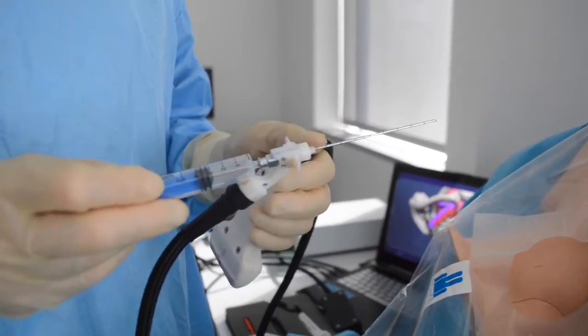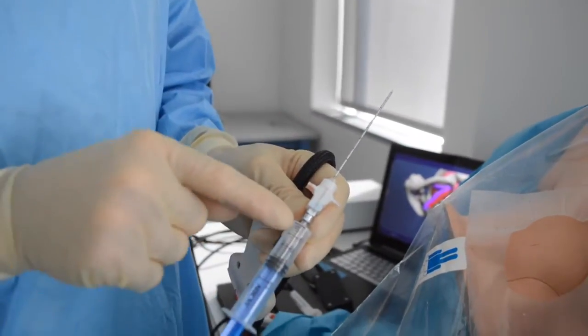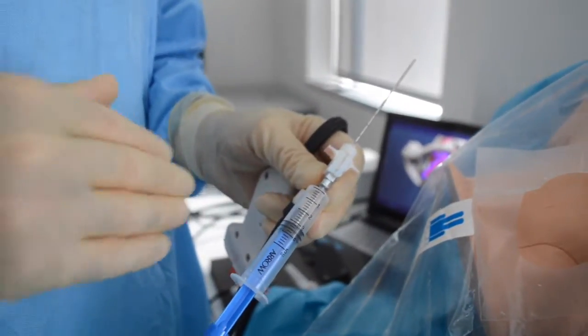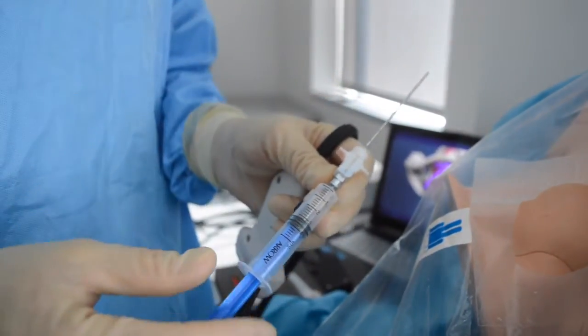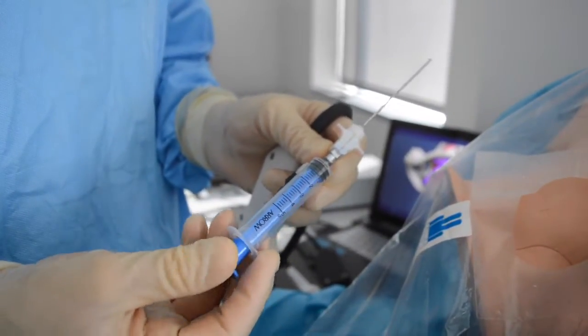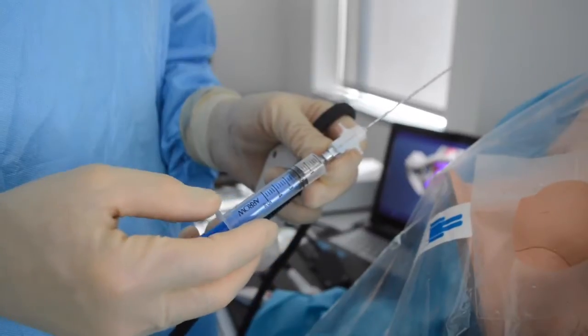When you do central vascular access, it is convenient to line up the numbers on the syringe with the bevel so you always know which way the bevel is open. You also want to crack the syringe before you use it so it doesn't have that stickiness that happens.